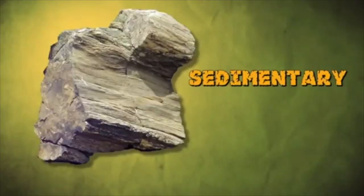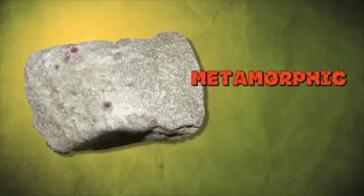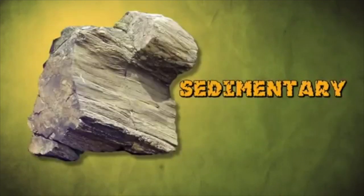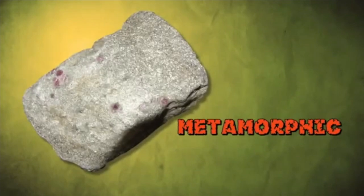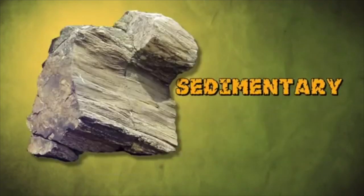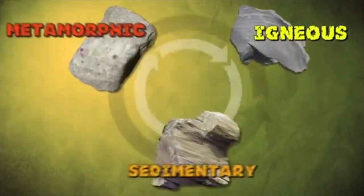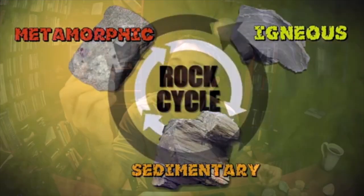As conditions on Earth change, rocks may change from one type to another. Sedimentary rocks can change into metamorphic rocks, or if they melt, into igneous rocks. Igneous rocks can change into sedimentary or metamorphic rocks. And metamorphic rocks can change into sedimentary or igneous rocks. Scientists call these changes the rock cycle. Rocks are pretty cool, especially the more you know about them.